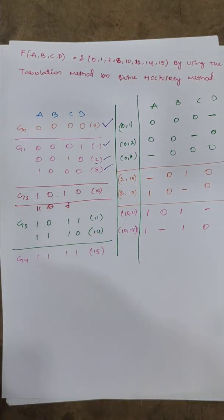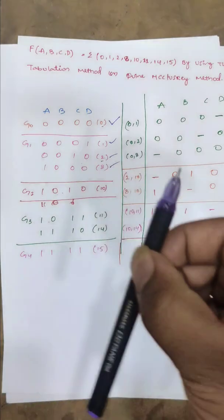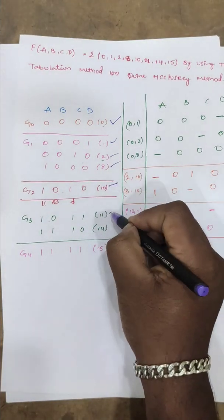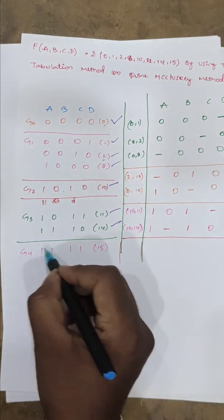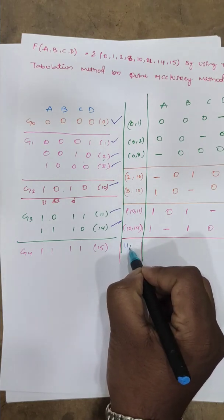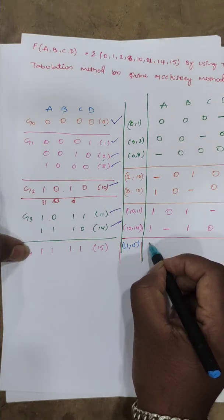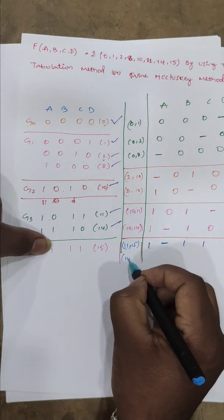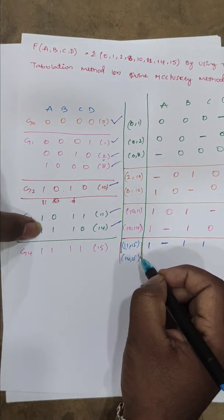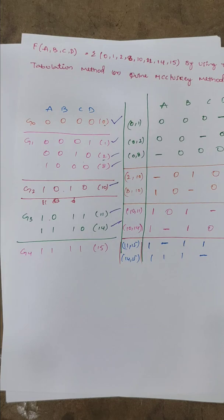Now we compare the higher group minterms. Comparing 11 and 15: 1,1 same; 0,1 different — underscore; 1,1 same; 1,1 same. Comparing 14 and 15: all 1s are same in three bits, and the last bit 0,1 is different — underscore. We add ticks to all used pairs.